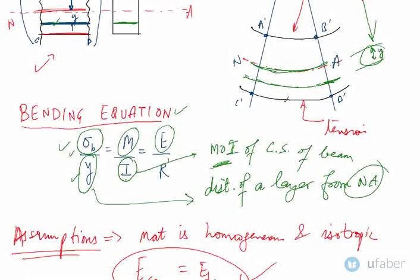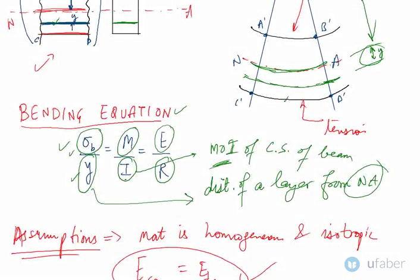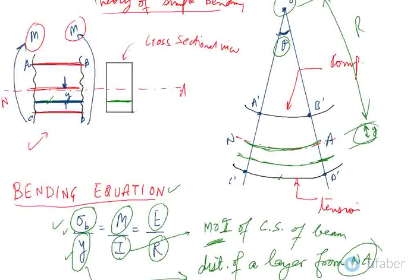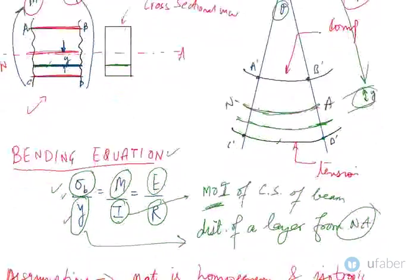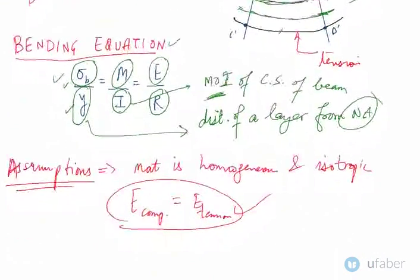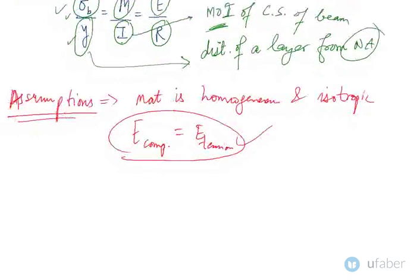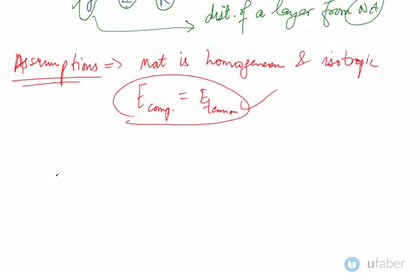When you combine all these terms, this is known as the bending equation. Now let's talk about the conventions of bending. If you have a beam which is initially straight and you apply bending moment onto this beam in this way, it will obviously bend.